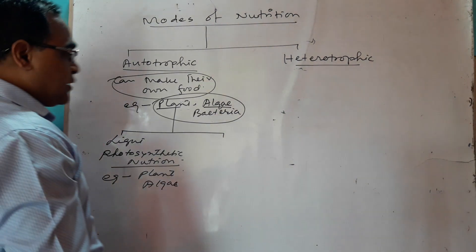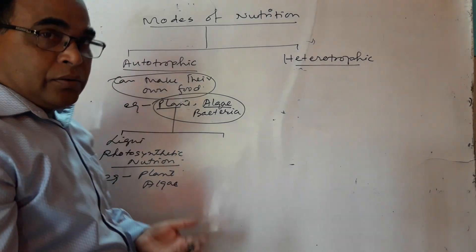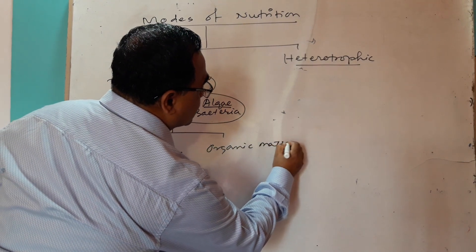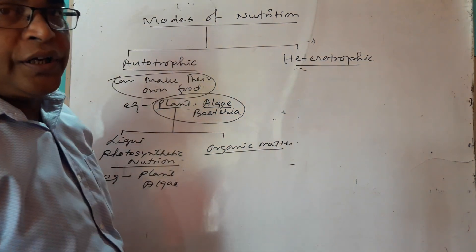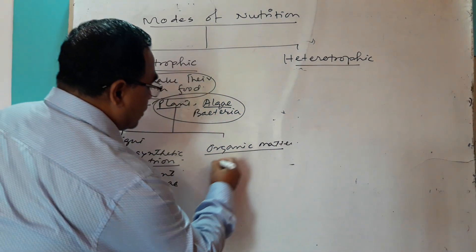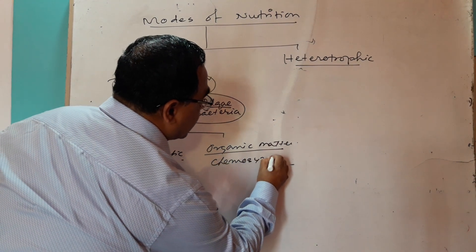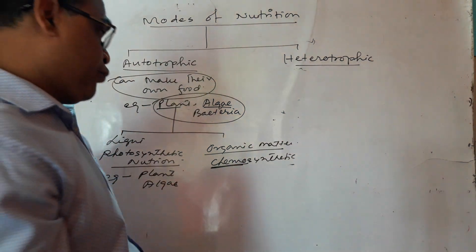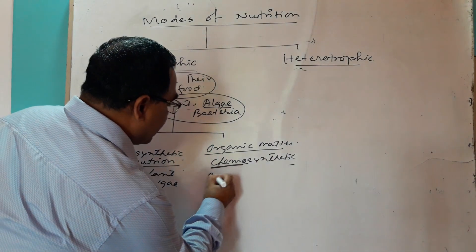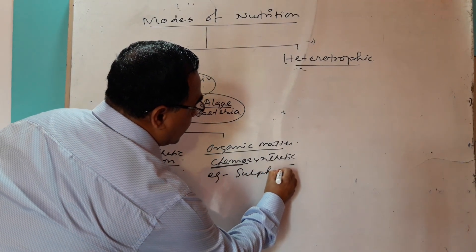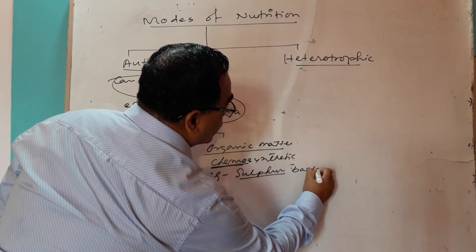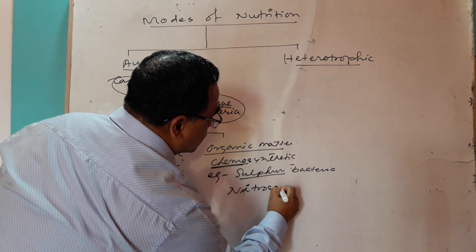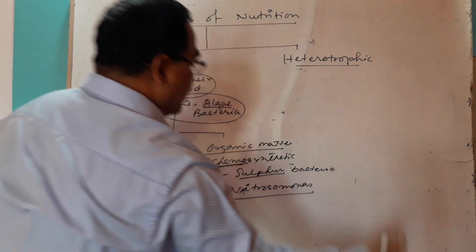Another type are also autotrophs but they do not require light. They break down organic matter and obtain food from there. These are called chemosynthetic. Chemosynthetic means breakdown of chemical matter to obtain energy. These organisms are basically bacteria — the example is sulfur bacteria — and nitrosomonas. So these are autotrophs but chemosynthetic.